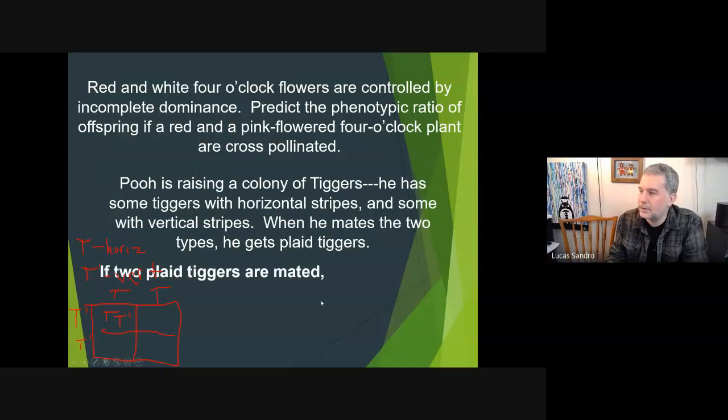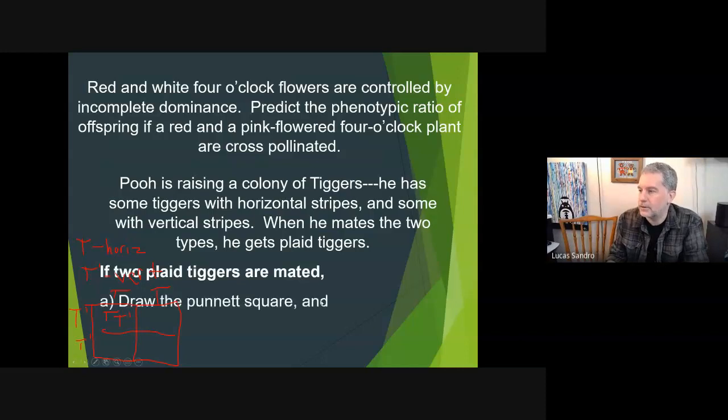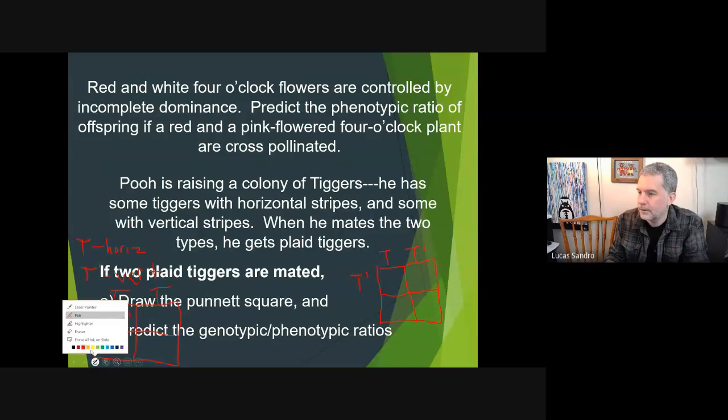But the actual question is: if two plaid tiggers are mated, draw the Punnett square, predict genotypic and phenotypic ratios. Easy enough - even though it's not Mendelian inheritance, we're taking two plaids: that's a T T prime crossed with a T T prime. You could do this in your sleep. T, T prime...